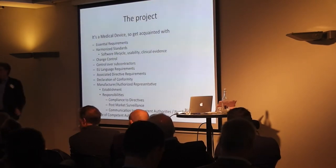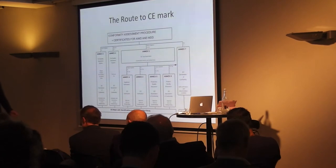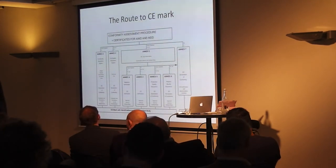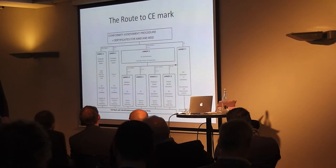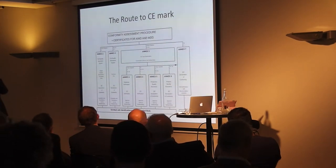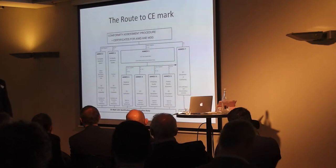This is the difference between the approval numbers of the notified body for Annex 4 to 6, and the evaluation and surveillance of Annex 5. What's the difference?